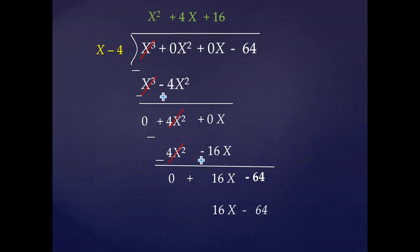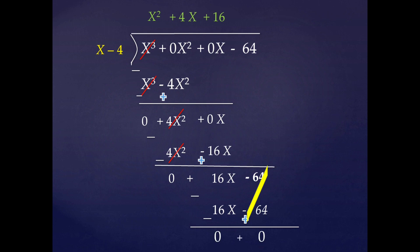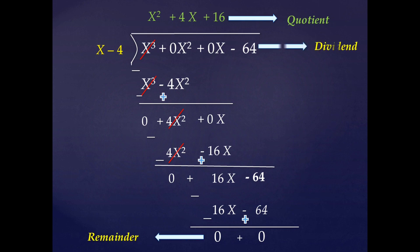We multiply both terms x and -4 by 16 to get 16x - 64. Subtracting: +16x becomes -16x and -64 becomes +64. Both 16x - 16x and +64 - 64 cancel, giving remainder 0. So x² + 4x + 16 is the quotient and 0 is the remainder.